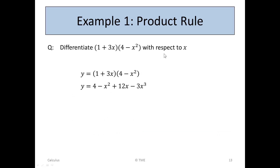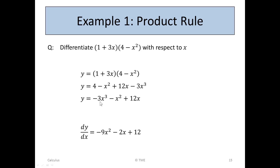If we wanted to do that without the product rule, we could have simply multiplied (1 + 3x) by (4 − x²), giving 4 − x² + 12x − 3x³. Rearranging: −3x³ − x² + 12x + 4. Differentiating using the general rule: dy/dx = −9x² − 2x + 12. This is exactly what we got using the product rule — so the product rule works. It's very often used, particularly where the terms are quite complicated in their own right and you wouldn't always want to multiply them out.